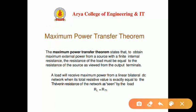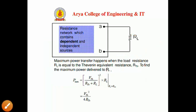The next important theorem is the maximum power transfer theorem. It states that to obtain maximum external power from a source with a finite internal resistance, the resistance of the load must equal the resistance of the source as viewed from the output terminals. A load will receive maximum power from a linear bilateral DC network when the load resistance is exactly equal to the Thevenin resistance of the network. To find the Thevenin resistance, replace all sources with their internal resistance and calculate the equivalent resistance from the load side.